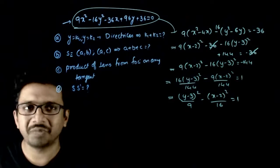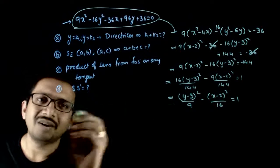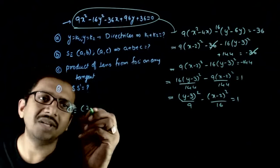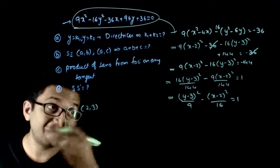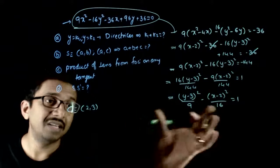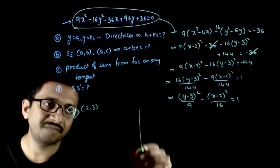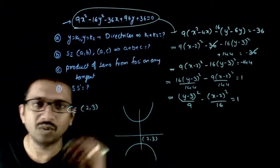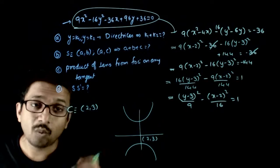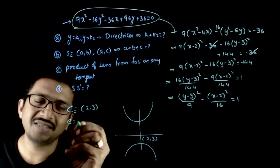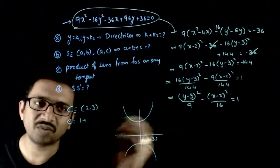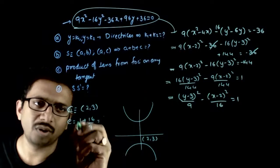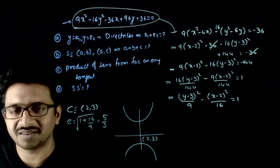Now let us analyze the properties. The center is nothing but (2, 3). This is a shifted vertical hyperbola with center (2, 3). The eccentricity is equal to √(1 + b²/a²), which is √(1 + 16/9), equal to 5/3. That is the eccentricity.